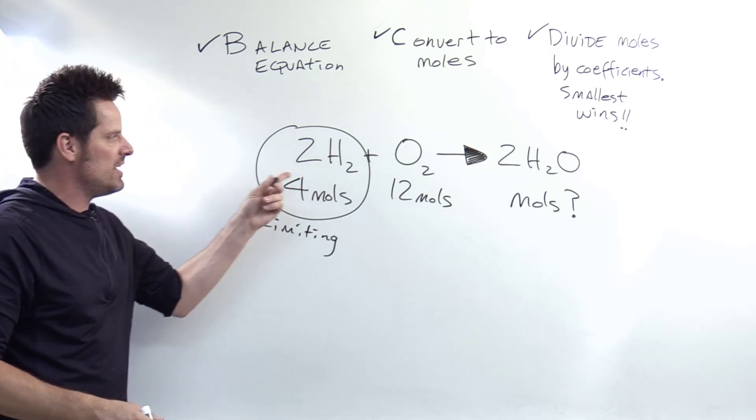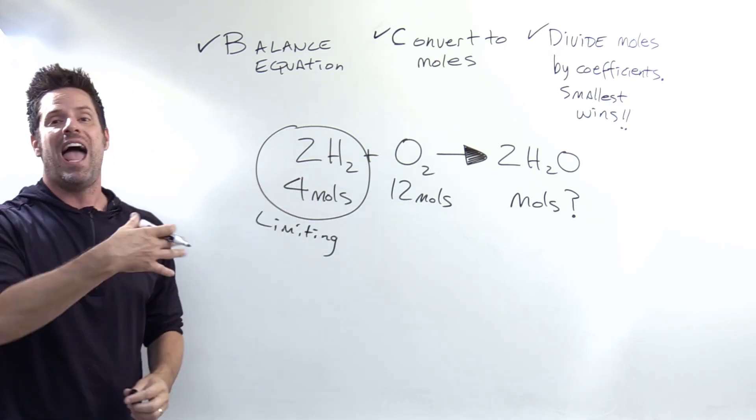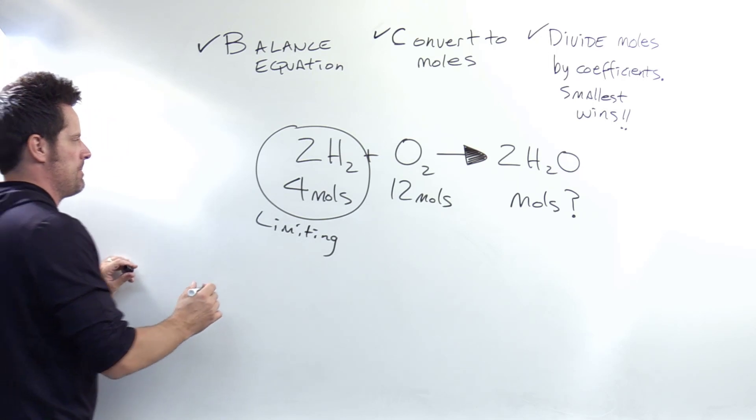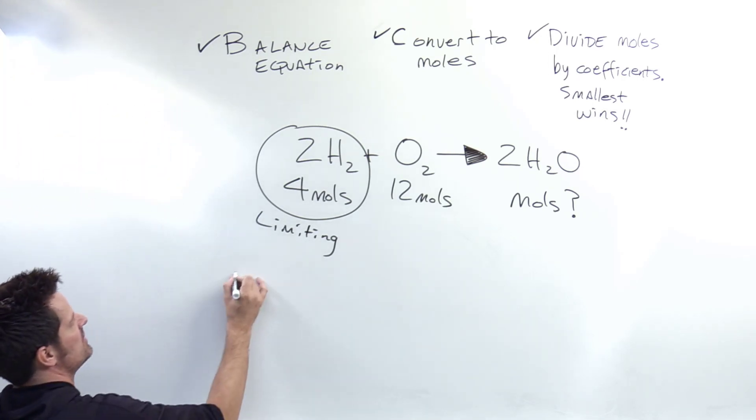We know that the limiting reactant here is H2. So we will calculate from four moles of H2 how many moles of H2O we'd end up getting. That is all done using dimensional analysis slash unit conversion.